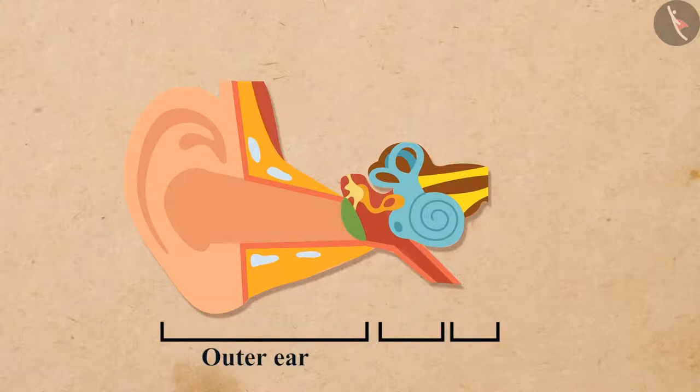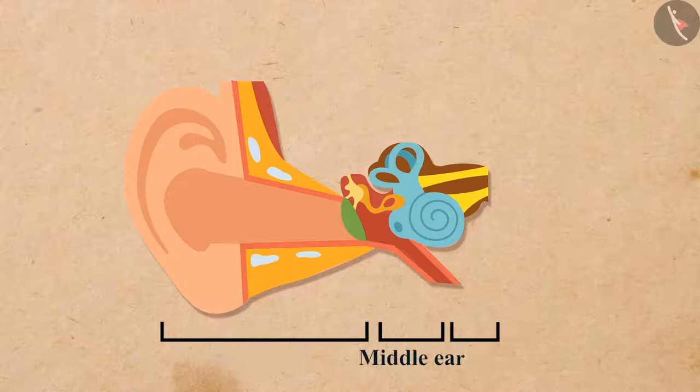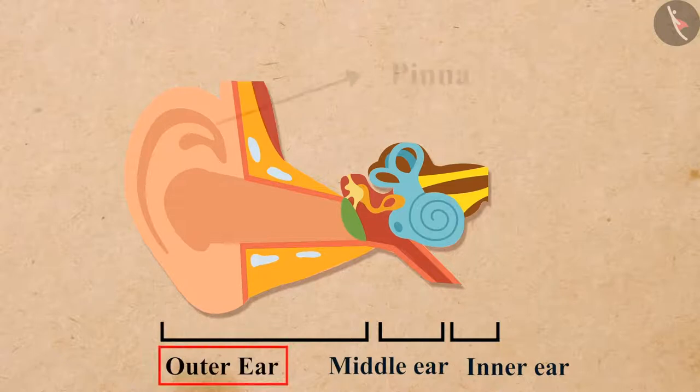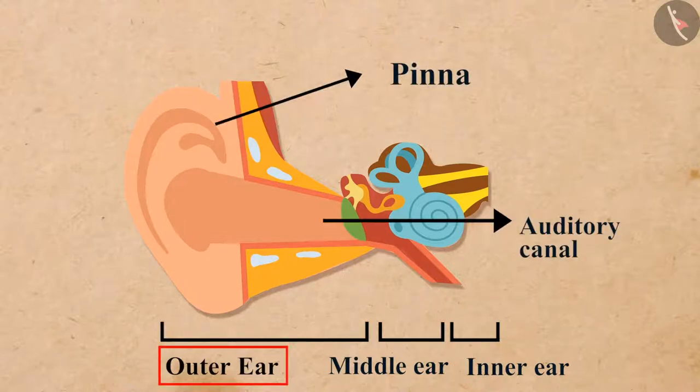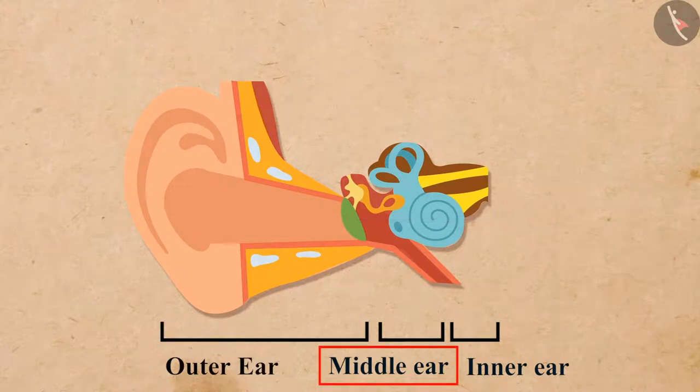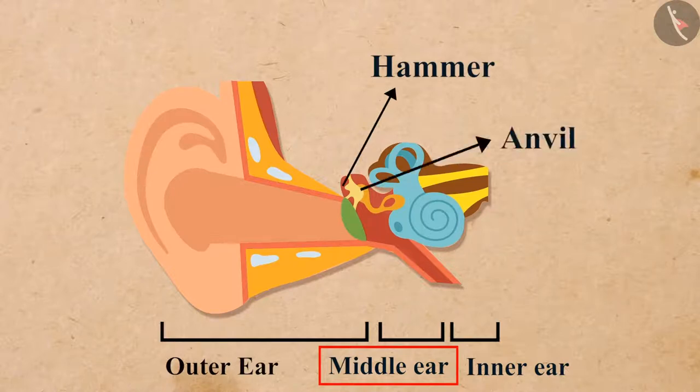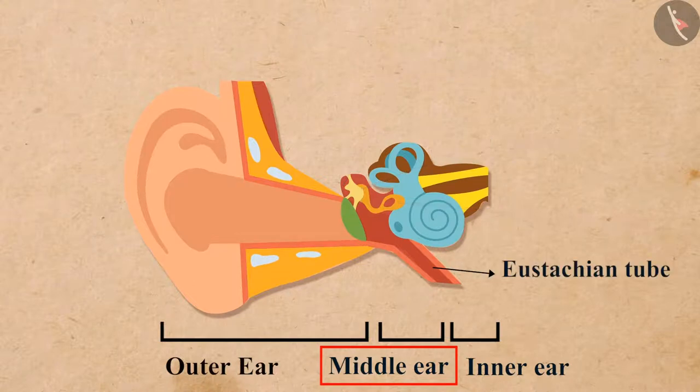The outer ear, the middle ear, and the inner ear. The outer ear includes the pinna and the auditory canal. The middle ear mainly includes three bones: the hammer, the anvil, and the stirrup, and the eustachian tube.